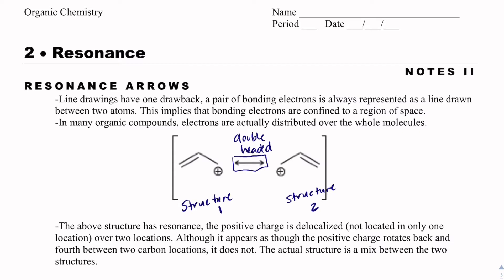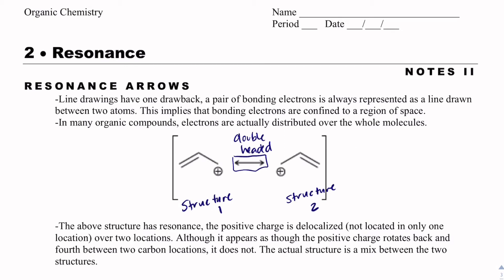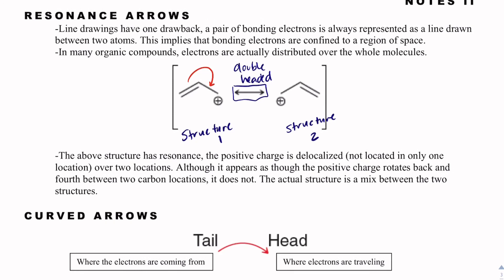That will always be true. We'll also have what's called resonance arrows that show the movement of electrons. This is a curved arrow, and the arrows represent pairs of electrons moving. The tail is where electrons are coming from, and the head is where electrons are traveling — wherever the arrowhead is pointing, that location becomes more negative.